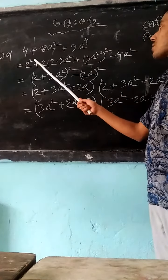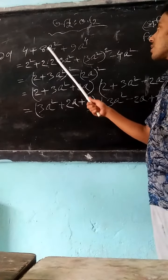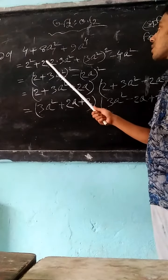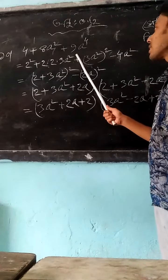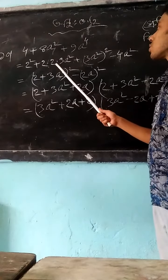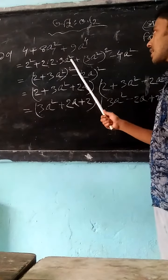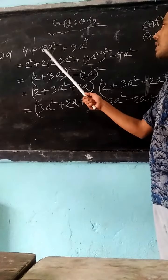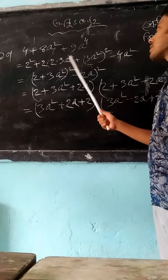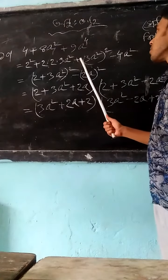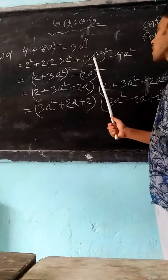2 square plus 2 into 2 into 3 square. 6, 2, 12 square. 1 square is 8 square. 2 square plus 9 into 2 square.